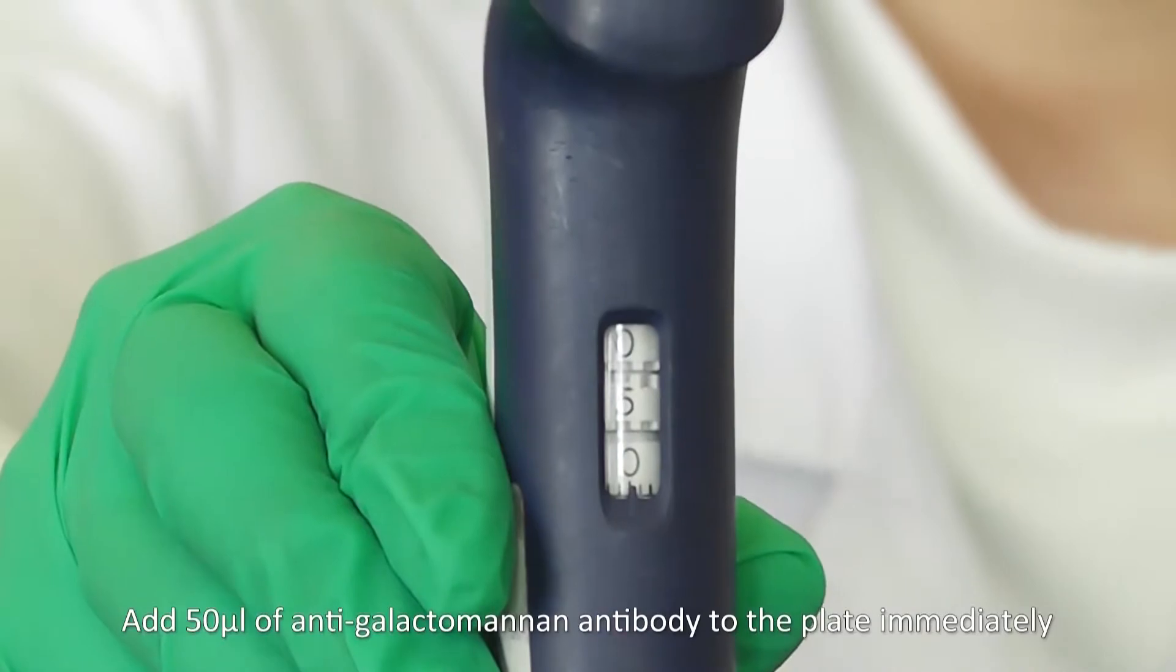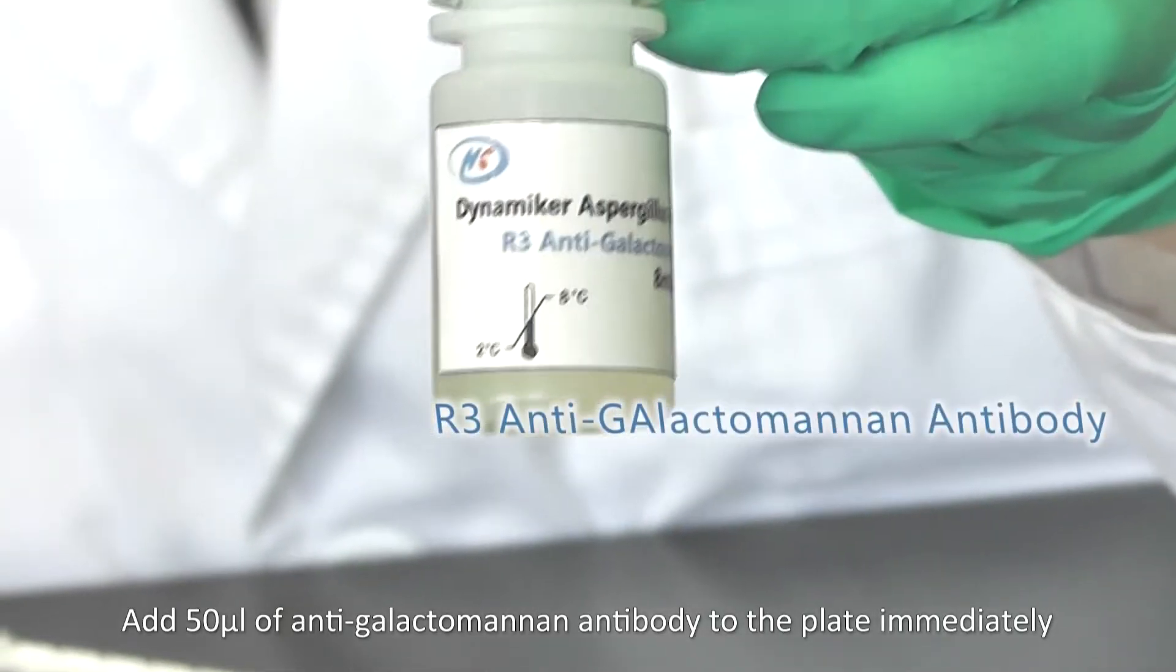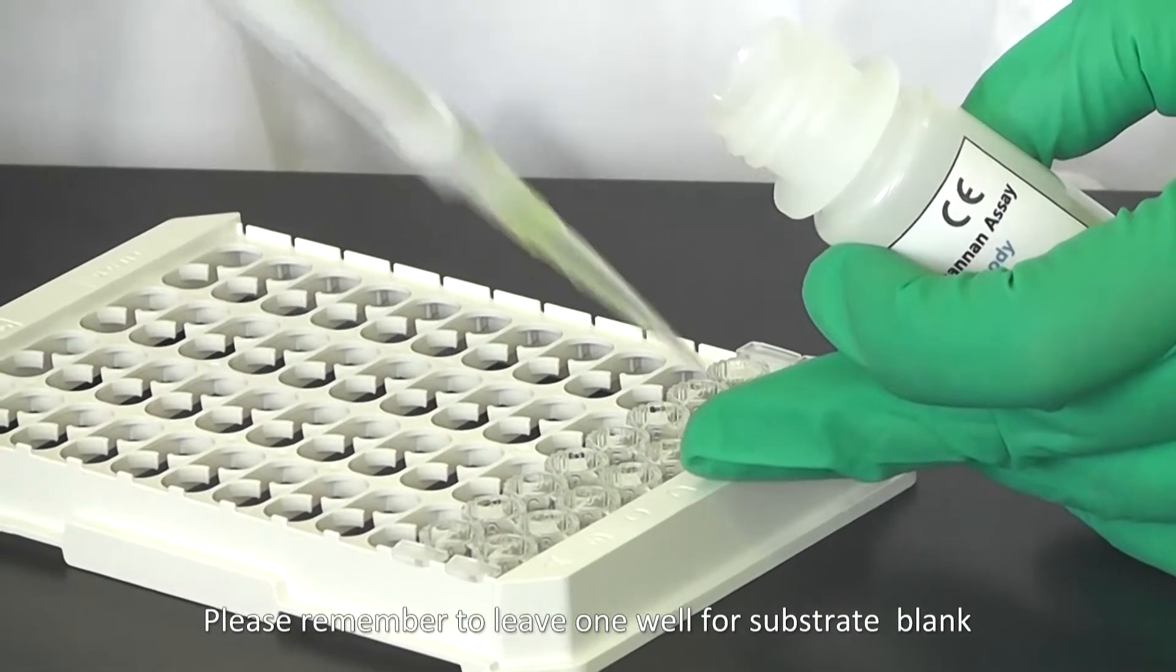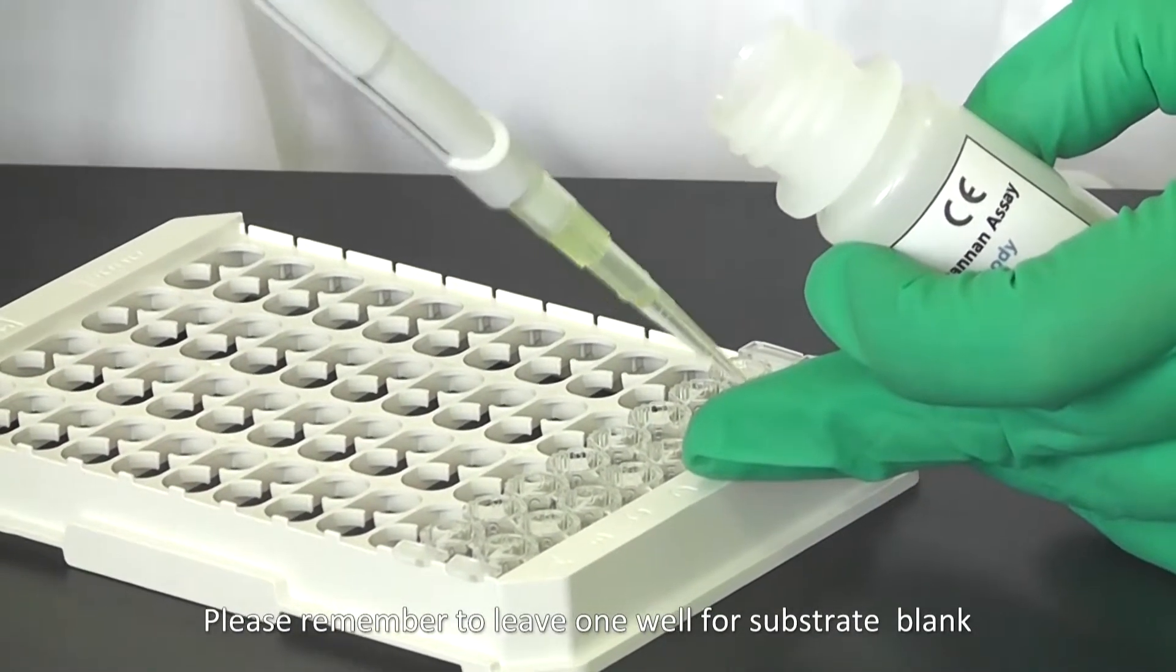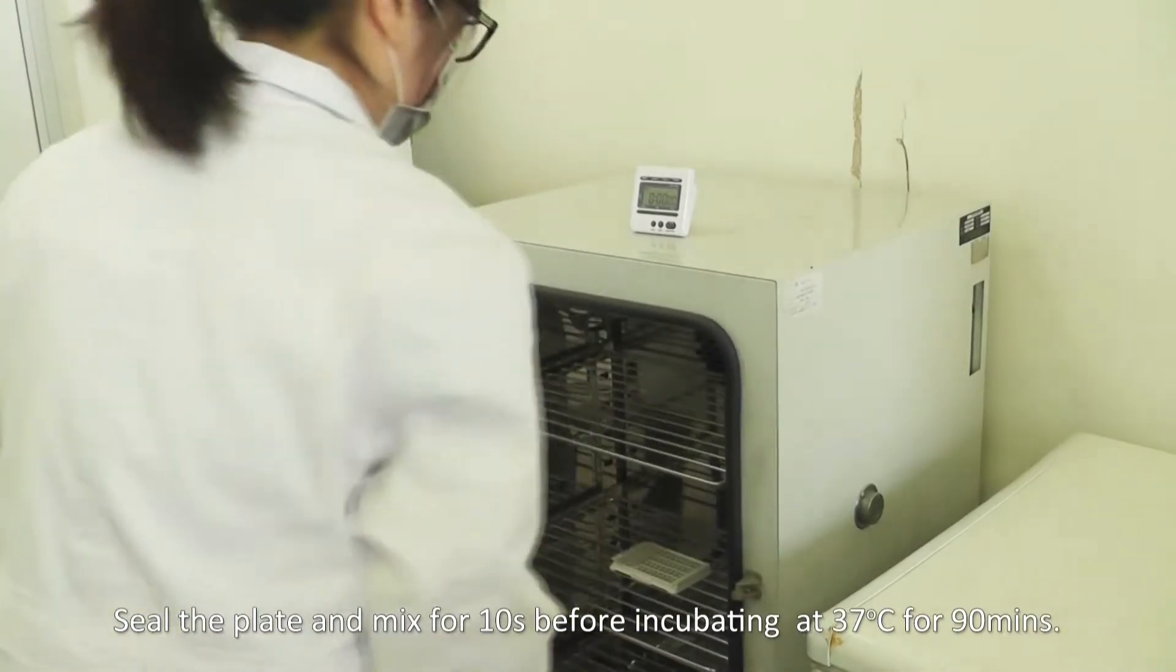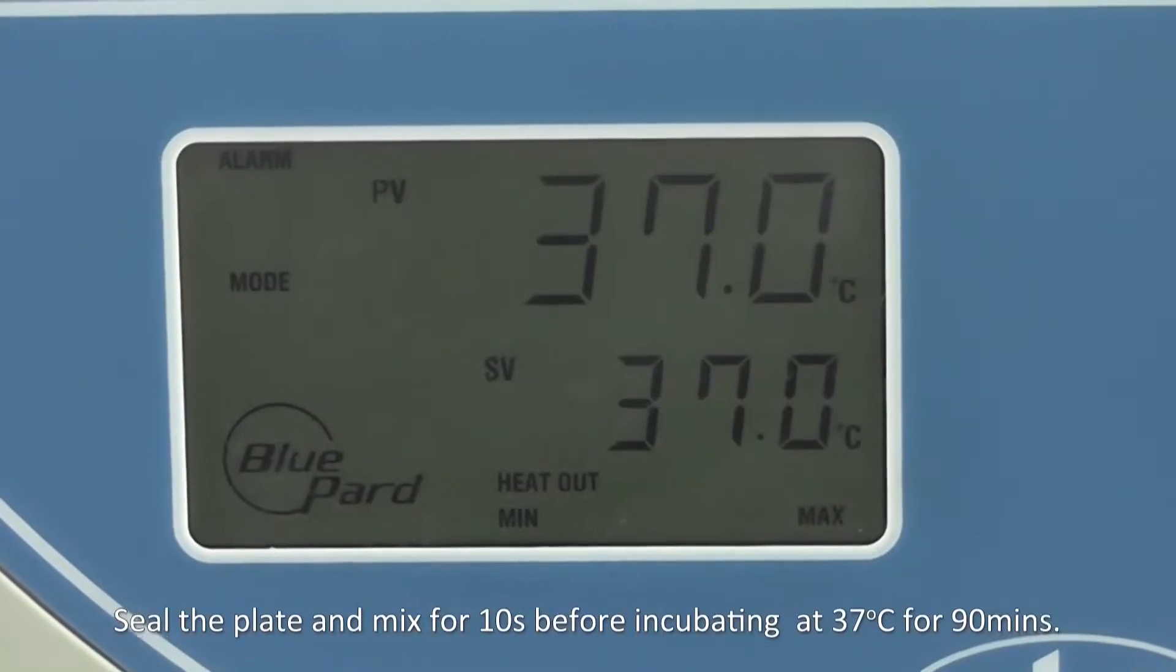Add 50 microliters of anti-galactomannan antibody to the plate immediately. Please remember to leave one well for substrate blank. Seal the plate and mix for 10 seconds before incubating at 37 Celsius for 90 minutes.